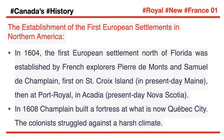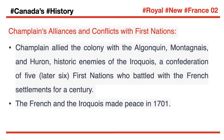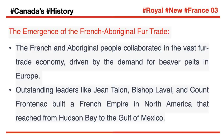The colonists struggled against a harsh climate. Champlain allied the colony with the Algonquin, Montagnais, and Huron — historic enemies of the Iroquois, a confederation of five, later six, First Nations who battled with the French settlements for a century. The French and the Iroquois made peace in 1701. The French and Aboriginal people collaborated in the vast fur trade economy, driven by the demand for beaver pelts in Europe.